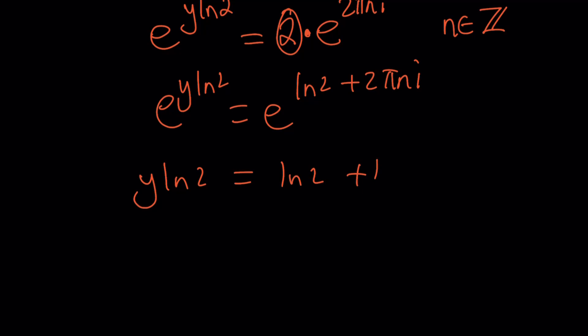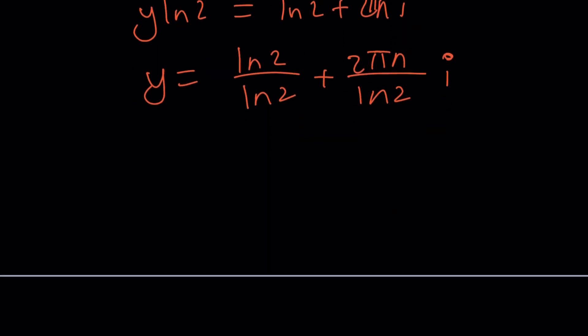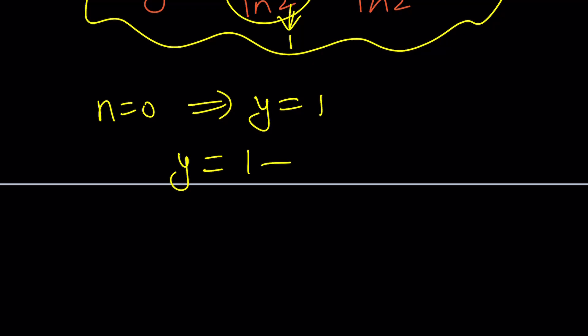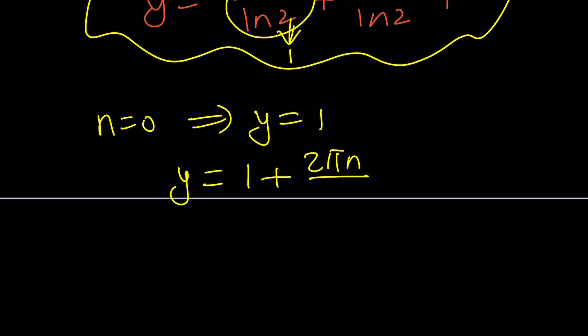You can divide both sides. ln2 plus 2 pi n i. I'm going to divide everything by ln2. That's going to give me ln2 divided by ln2 plus 2 pi n divided by ln2 multiplied by i. Now, with this, I get a complex solution for y. And guess what happens if n is equal to 0? We get y equals 1. Because this is 1, so the general solution can actually be written as 1 plus 2 pi n divided by ln2 multiplied by i. And as you know, this is a complex number in standard form, a plus bi.